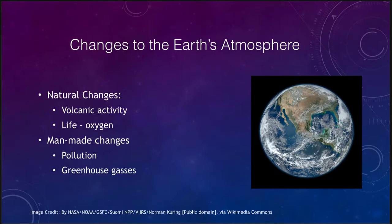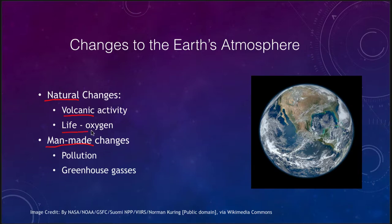We'll start off looking at some of the basic changes that can occur to the Earth's atmosphere. These changes can be divided into two parts: natural changes and man-made changes. Volcanic activity is one example — it spews material into the atmosphere and can change its composition. This may be where a lot of the original Earth's atmosphere came from. Life can also impact the atmosphere by putting oxygen in it. Earth is the only object we know of that has oxygen in its atmosphere, and that is entirely caused by life.